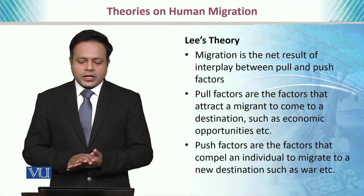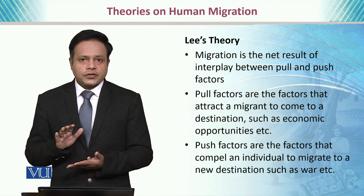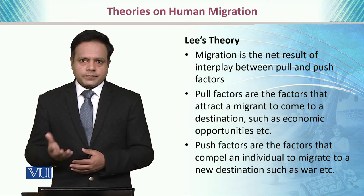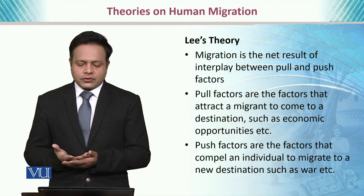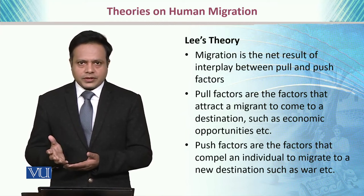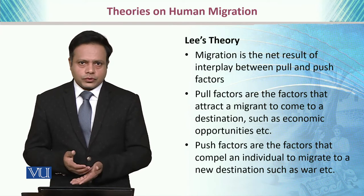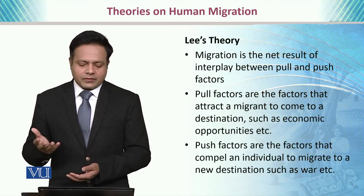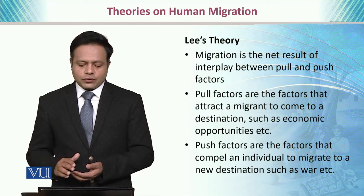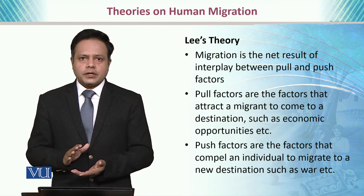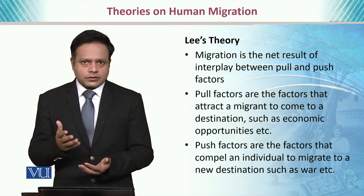We also have Lee's theory of migration, which says that migration is the net result of the interplay between pull and push factors — a very prevalent theory in modern migration literature. Pull factors are factors that attract a migrant to a certain destination, such as economic opportunities, health opportunities, business opportunities, or education opportunities. Push factors are factors that compel an individual to migrate to a new destination, such as war, a natural catastrophe, or the absence of certain life facilities.